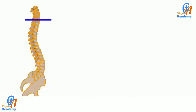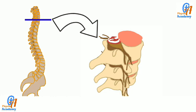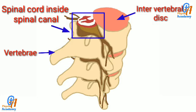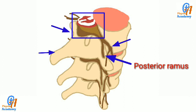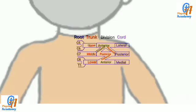As we know, the spinal cord passes through the spinal canal of the vertebral column. Then it divides into two parts: anterior and posterior rami. The anterior rami of C5, C6, C7, C8, and T1 form the brachial plexus.